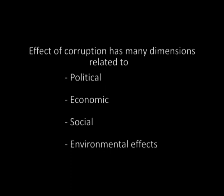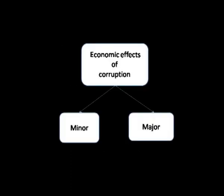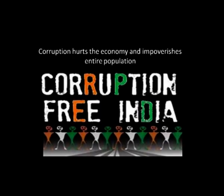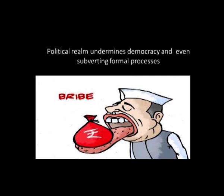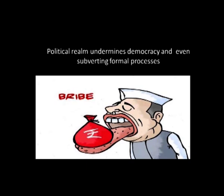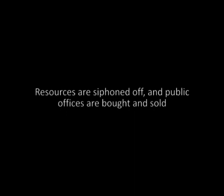The consequences of corruption have many dimensions related to political, economic, social, and environmental effects. The economic effects of corruption can be categorized as minor and major, but both have serious impact on the individual, community, and country. Corruption leads to the depletion of national wealth, and large-scale corruption hurts the economy and impoverishes entire populations. In the political realm, it undermines democracy and good governance by flouting or subverting formal processes. It violates basic principles of republicanism, erodes institutional capacity of government, and leads to procedures being disregarded and public offices being bought and sold.